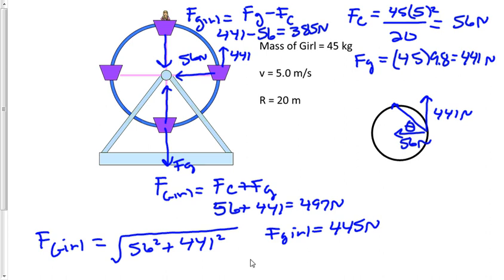Now, what's our angle theta? We'll take the tangent of theta equals y over x, so 441 over 56. We get an angle of 83 degrees.